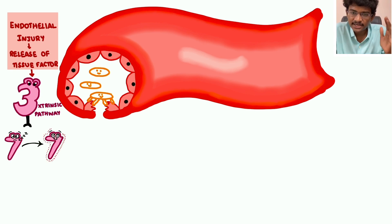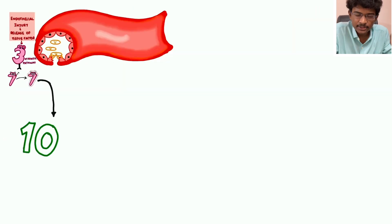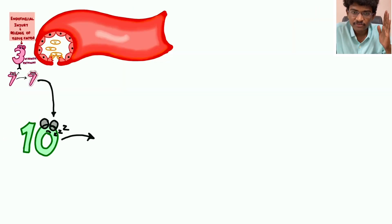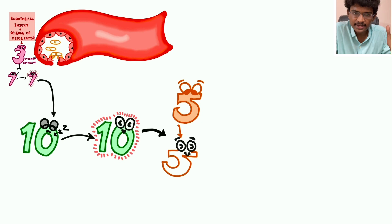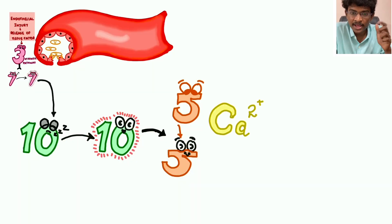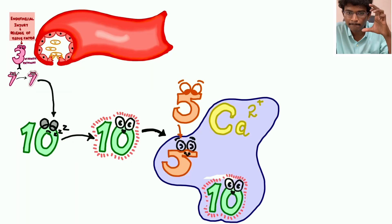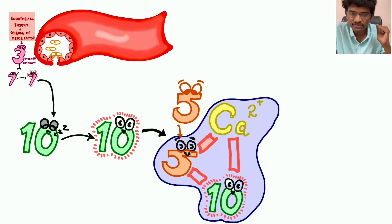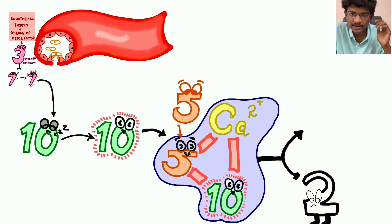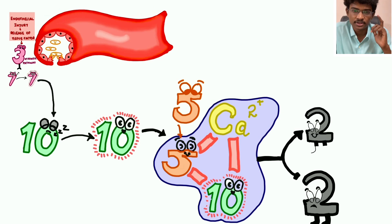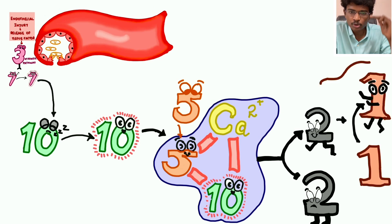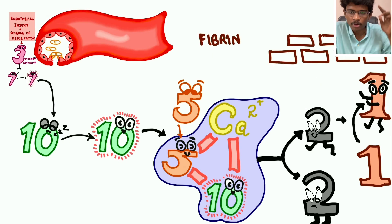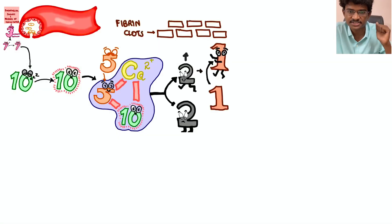Factor 7a activates factor 10 into 10a, and factor 10a activates factor 5 into 5a. Factors 5, 10, calcium, and phospholipids combine to activate the most important player in the coagulation system — factor 2, thrombin. Thrombin then converts fibrinogen to fibrin, forming the clot.